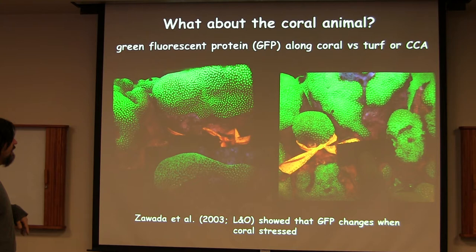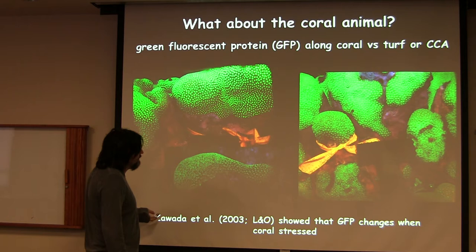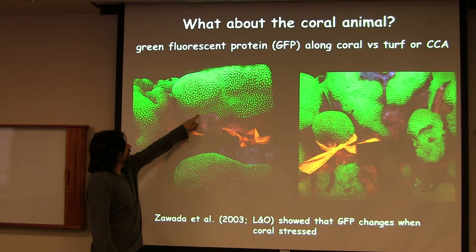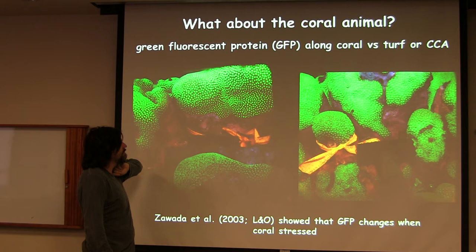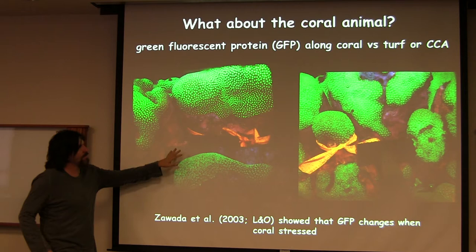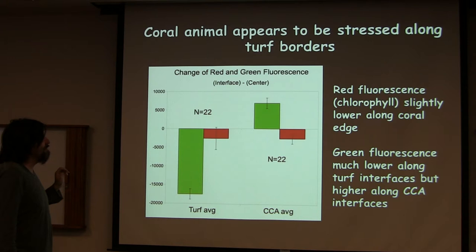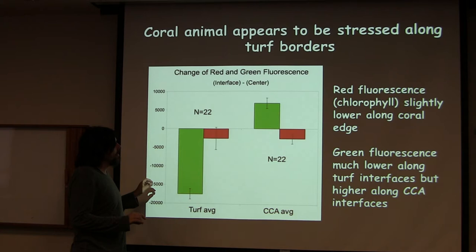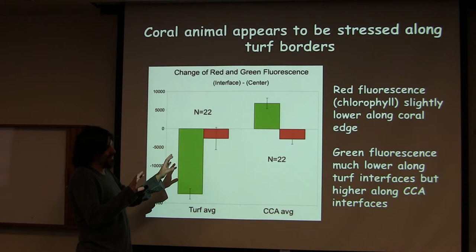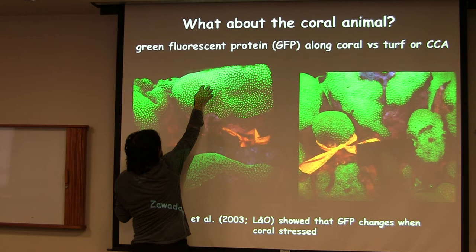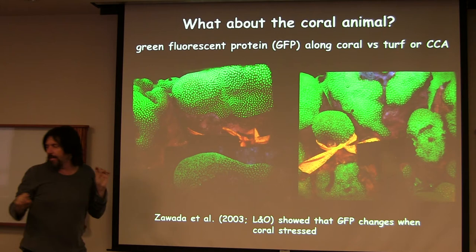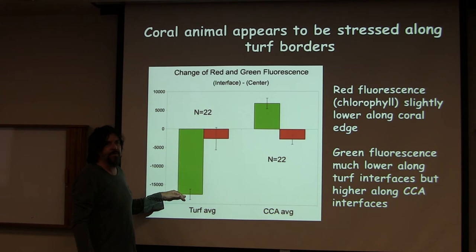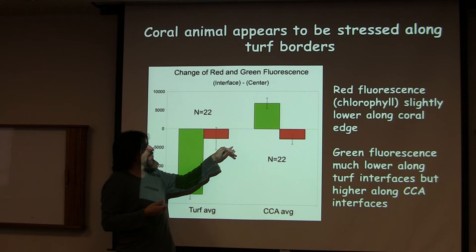This comes out of the last time we were in Curacao. It's based on something that Zuwada had done. The corals have GFP — that's what they look like under this modified dive light that Mark Hattay built. There's the coral, there's the CCA. What Katie did in this case is she normalized the amount of GFP at these different points. What you notice is that this is basically the interface of the coral. What you find is that there's a decrease in GFP along the borders of turf — almost like the coral isn't doing its normal thing. It's actually increased along the borders with CCA.